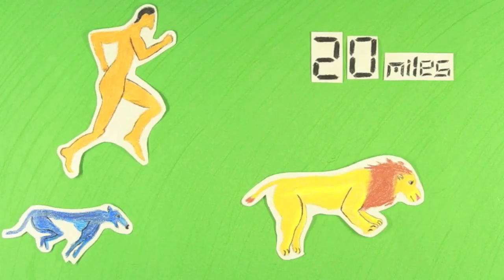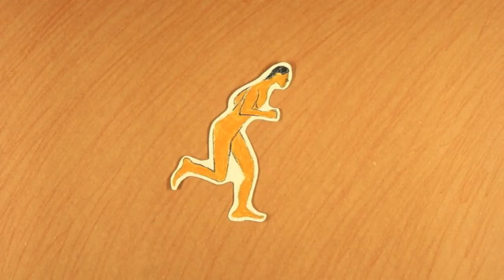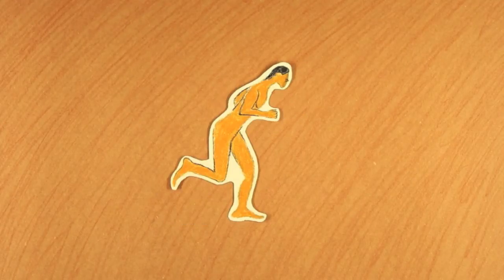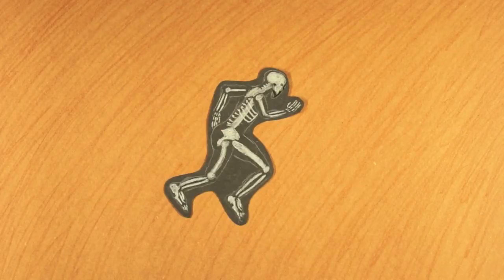But did you know that humans can outrun any land animal over a long enough distance? Evidence that endurance running was important for early humans is based on various morphological traits seen in human fossils. These fossils show the development of body structures that facilitate a running lifestyle.